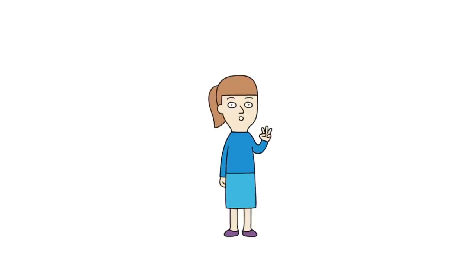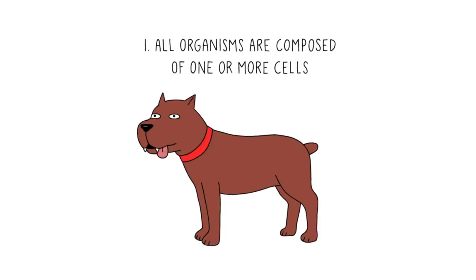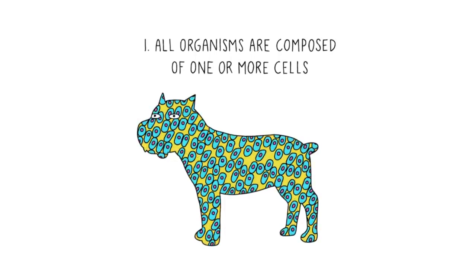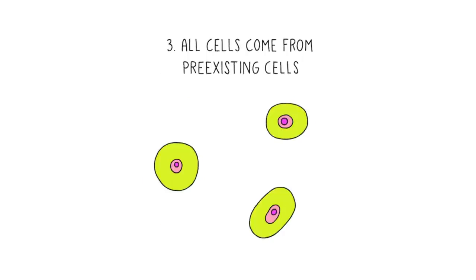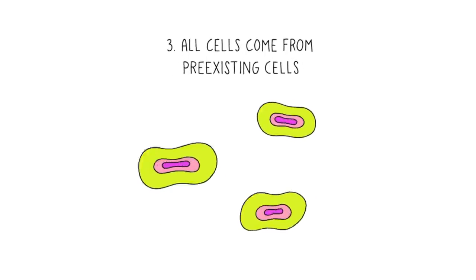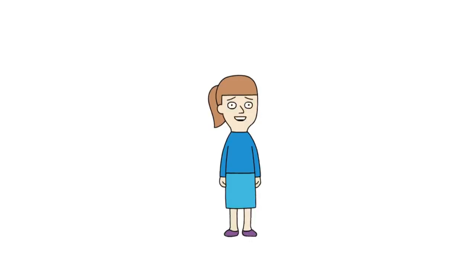There are three parts to the cell theory. One, all organisms are composed of one or more cells. Two, the cell is the basic unit of structure and organization in organisms. And three, all cells come from pre-existing cells.